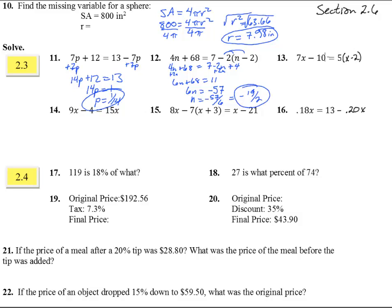Number 13. 7x minus 10 equals 5x minus 2. Let's distribute that and we get 7x minus 10 equals 5x minus 10. We subtract 5x from both sides to get the x's together and we end up with 2x minus 10 equals negative 10. Add 10 to both sides, we get 2x equals 0. Divide both sides by 2 and we get x equals 0.